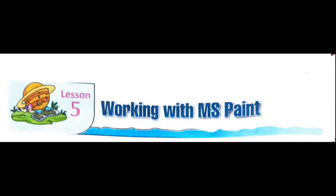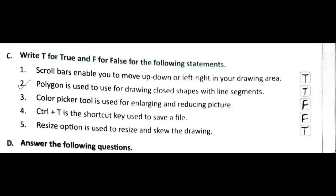This is Lesson Number Five, working with MS Paint. Let's do the next exercise of this lesson. It is a True or False exercise. Write T for True and F for False for the following statements.